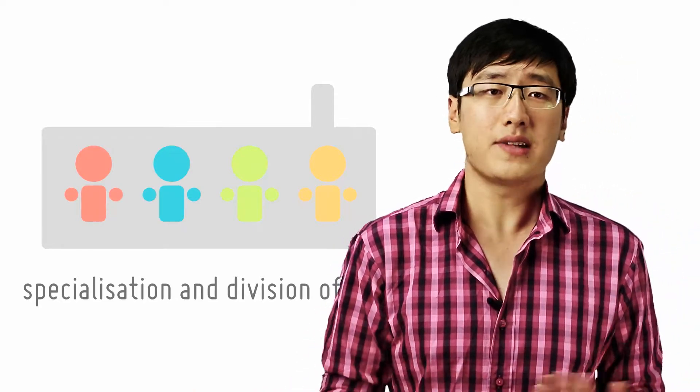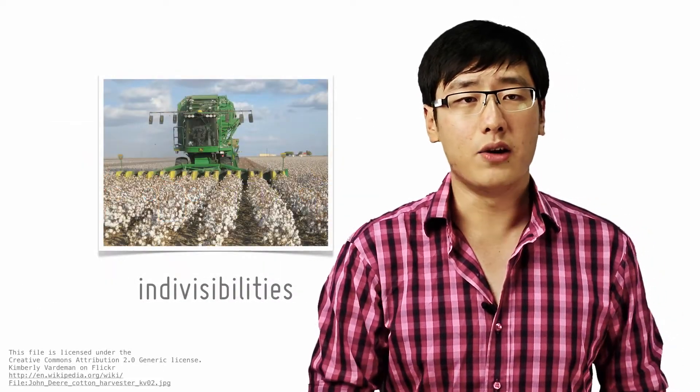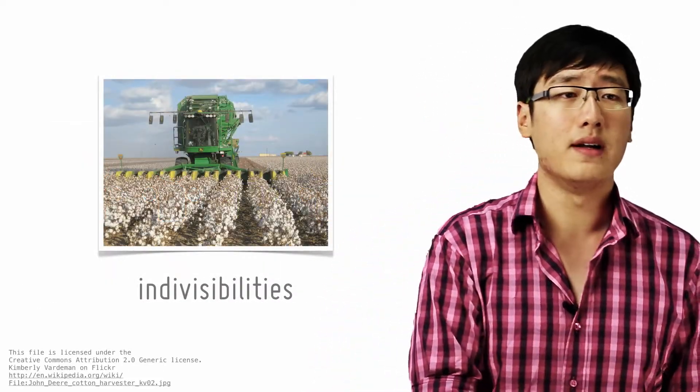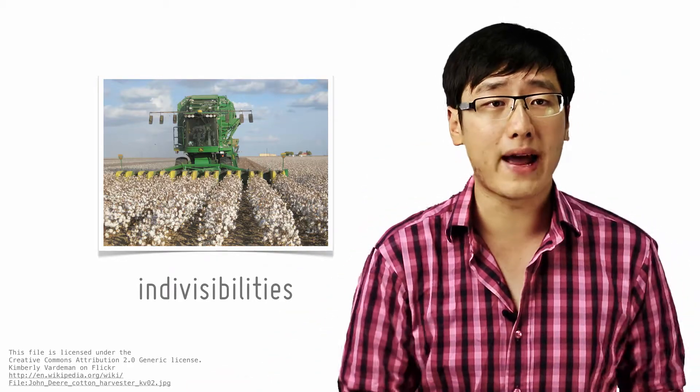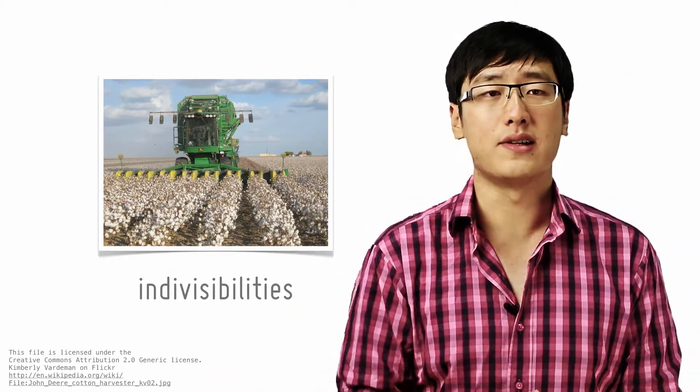There are also indivisibilities. Some inputs are of a minimum size; they are indivisible. For example, machinery. If you are a small scale farmer, you cannot make full use of a large combined harvester. You have to be of a minimum size to use it.